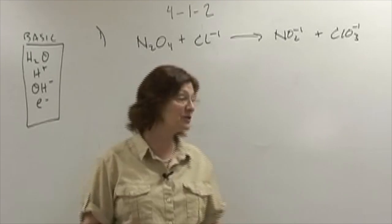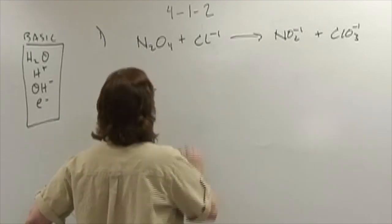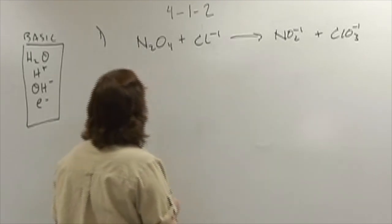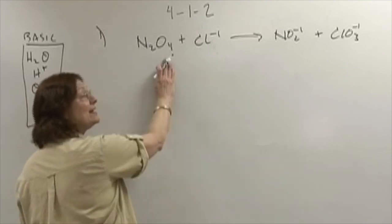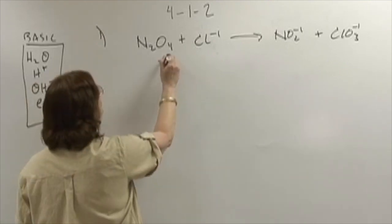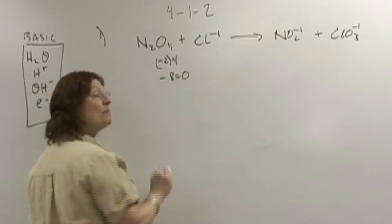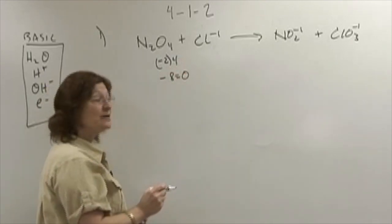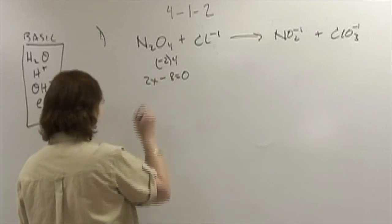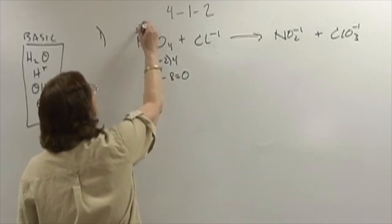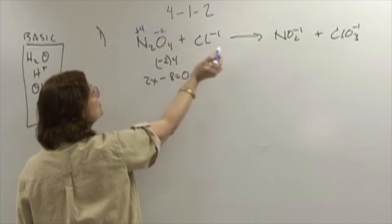The very first thing I must do is determine the charges of all the elements. Oxygen here is in the negative position, and therefore oxygen is -2 times 4 equals -8. This is a compound, so its overall charge is zero. There are two nitrogens, and therefore each nitrogen is +4 and oxygen is -2.